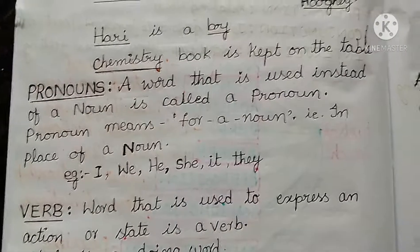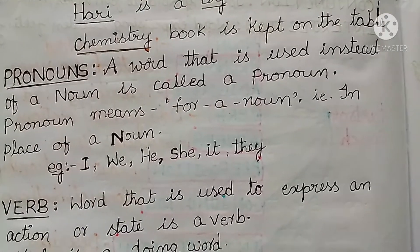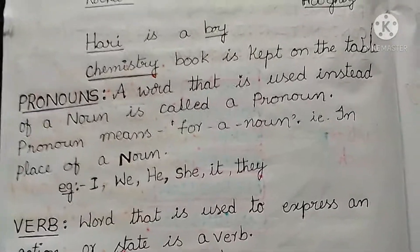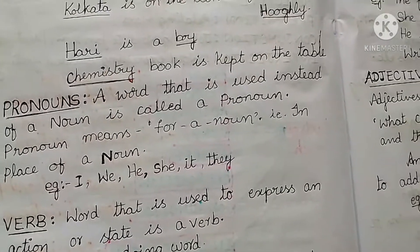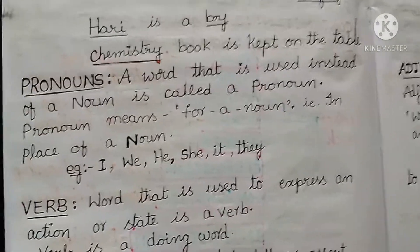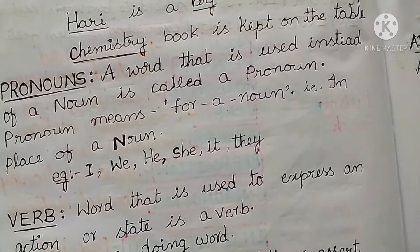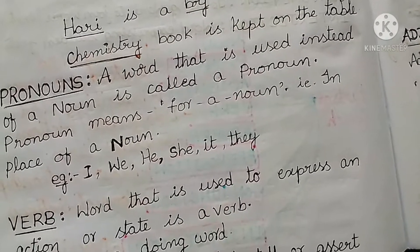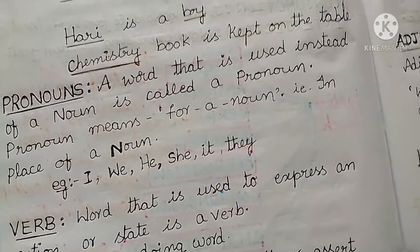Next, coming to pronouns. Pronouns are words used instead of a noun — they are called pronouns. Pronoun means 'for a noun,' that is, in the place of a noun. It is a substitute of a noun. A pronoun is usually substituted for a specific noun, which is called its antecedent.